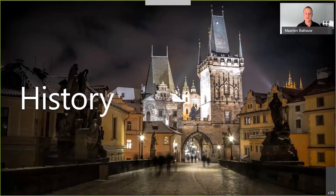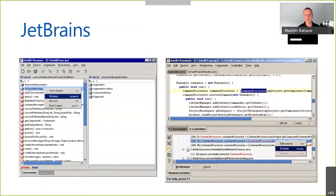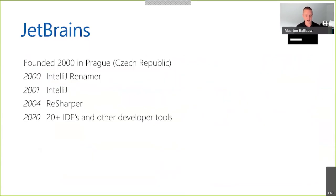Before we dive into the technical things, I want to give a little history about where JetBrains comes from and how Rider came about — to understand why we made certain technical choices. This is the first product JetBrains released. JetBrains was called IntelliJ back then, and it was called IntelliJ Renamer. IntelliJ Renamer was literally nothing more than something that could look at your file system, open a Java project, see which classes were used where, and rename classes. That was all we had. This happened in 2000.